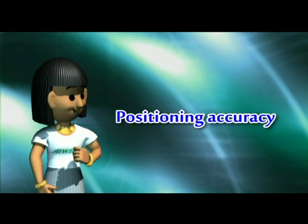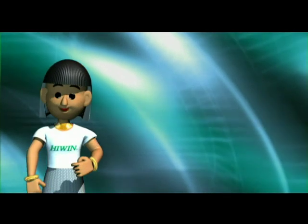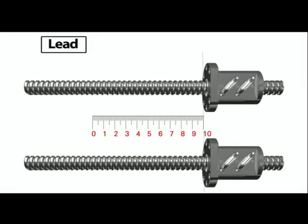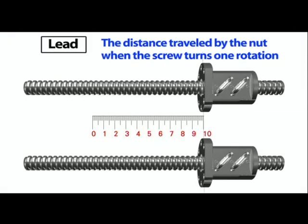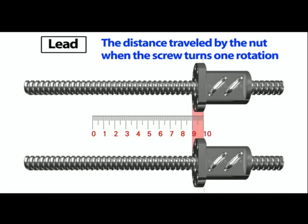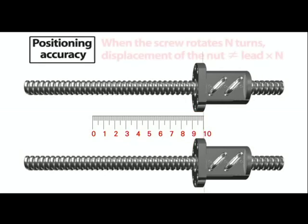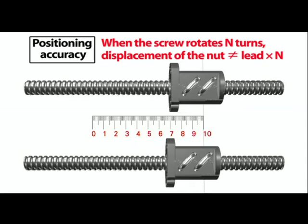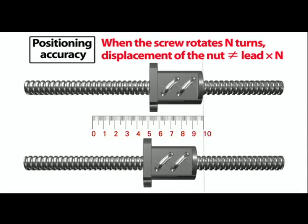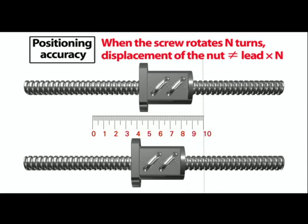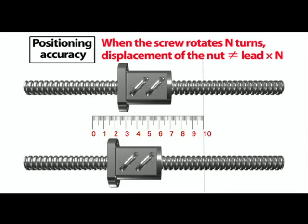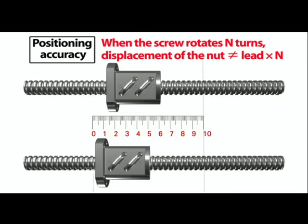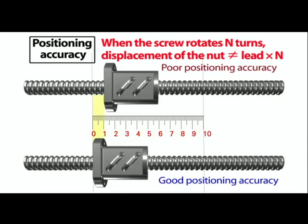Positioning Accuracy. Lead is the distance traveled by the nut when the screw turns one rotation. Loss of positioning accuracy may be caused by small differences in the lead due to manufacturing error. When the screw rotates 10 times, the displacement of the nut will not actually be exactly equivalent to 10 times the lead.